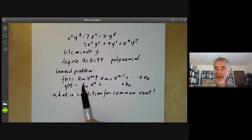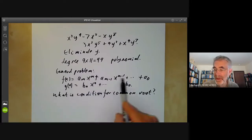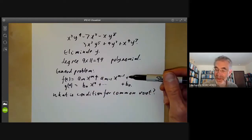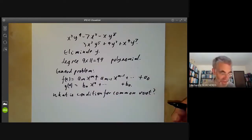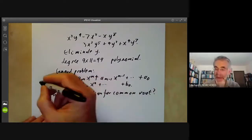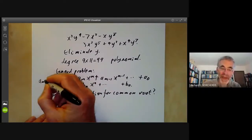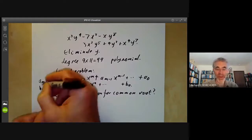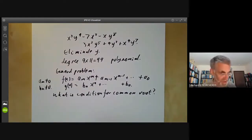What is the condition for them to have a common root? So I want to find some condition on the coefficients ai and bj, which is a necessary and sufficient condition for these to have a common root. First of all, there are some slight complications if am or bn are 0. So let's just assume am is not equal to 0 and bn is not equal to 0 for the moment. And I'll remove these conditions later.